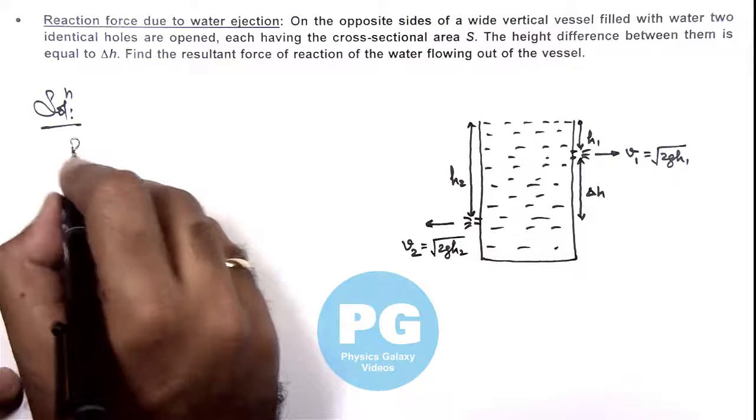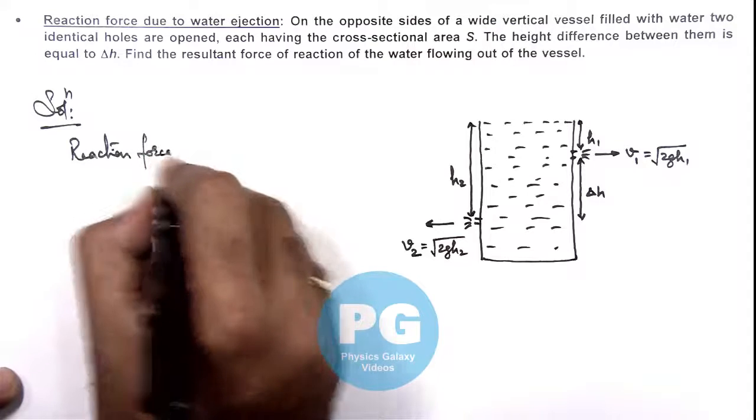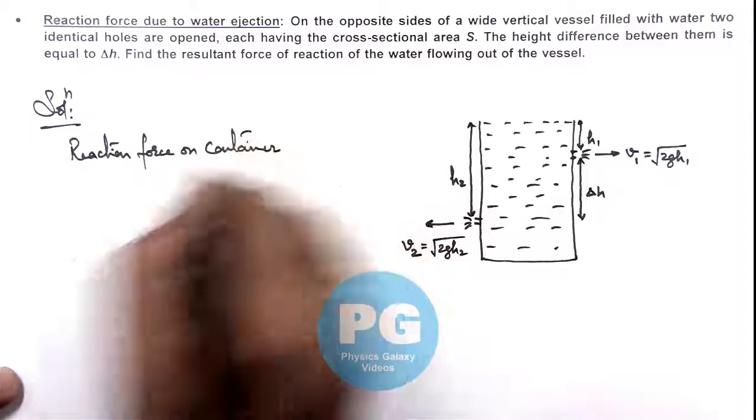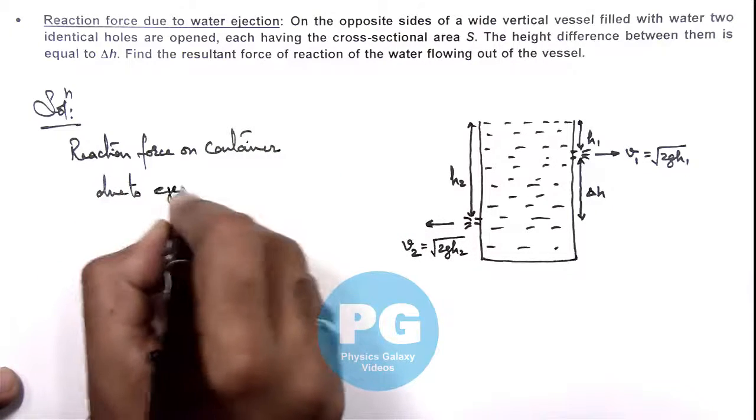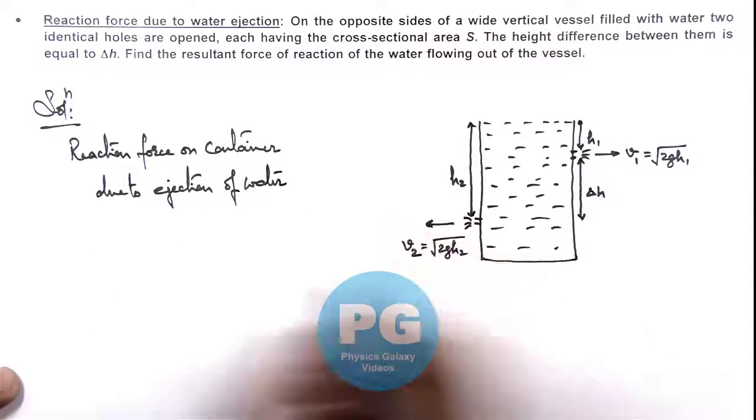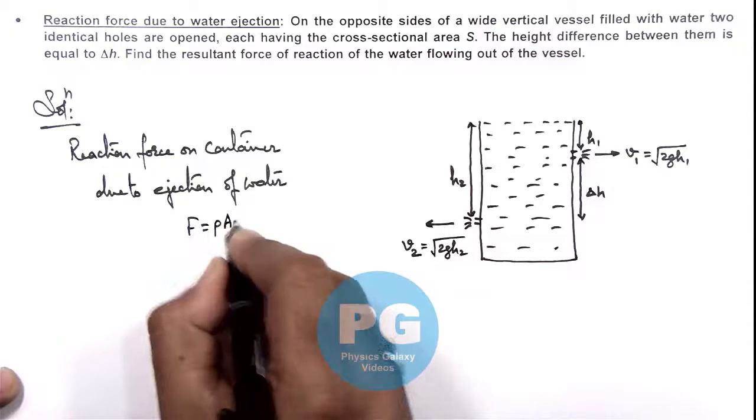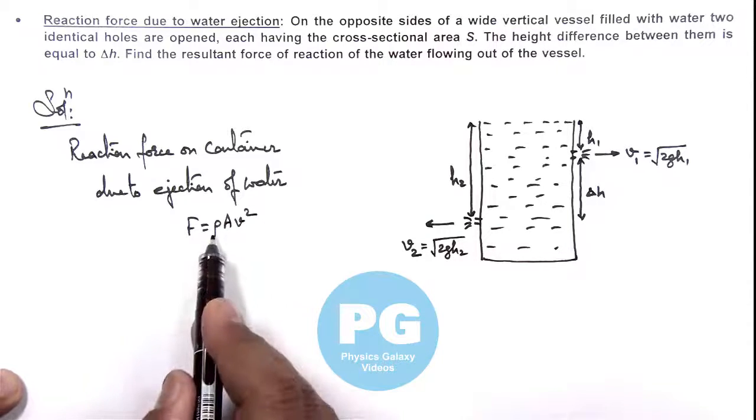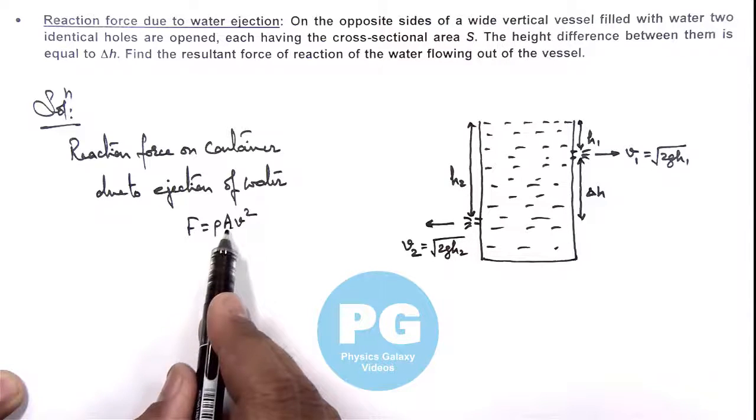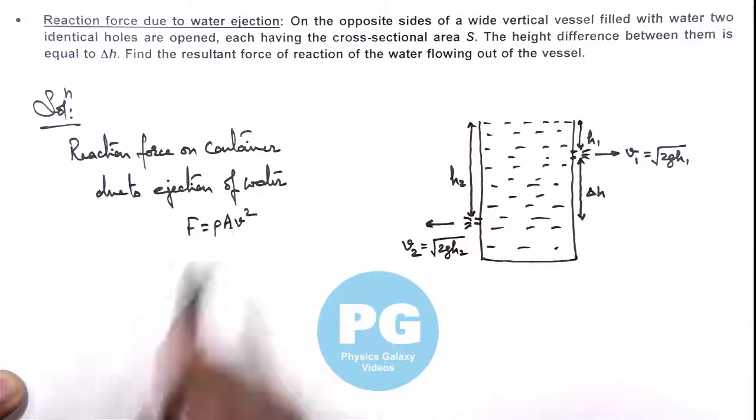And if we talk about reaction force on container due to ejection of water, this I hope all of you are aware of, the reaction force is given by ρAv². If ρ is the density of fluid, A is the cross-sectional area of hole from which the fluid is coming out, and v is the relative speed with respect to container with which it is coming out.